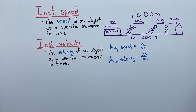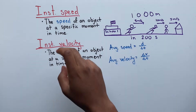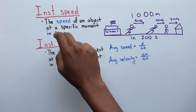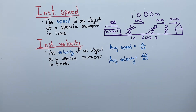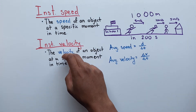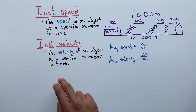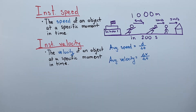The instantaneous speed is defined as the speed of an object at a specific moment in time. The instantaneous velocity is defined as the velocity of an object at a specific moment in time. Now let me explain further.